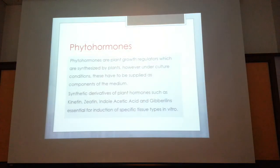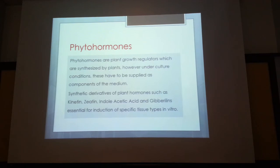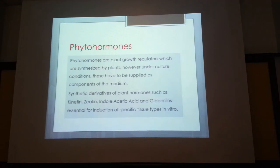Phytohormones include two main types: auxins and cytokinins. Plants also produce brassinosteroids — plant steroids used for differentiation — but these are not commercially available for tissue culture. We therefore use auxins and cytokinins. Among cytokinins, one of the most commonly used is kinetin, which provides the building blocks for nucleotides and DNA synthesis. When kinetin is present, the plant is induced to grow into shoots.